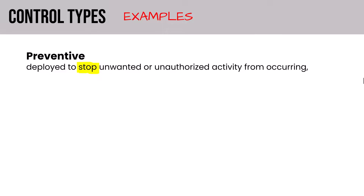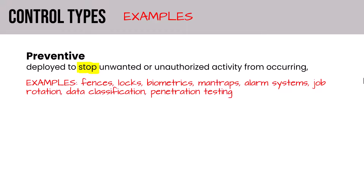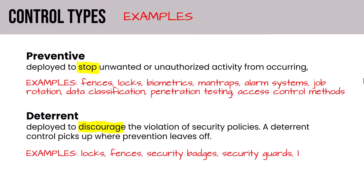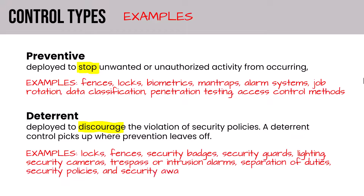Looking at examples of control types: preventive controls, deployed to stop unwanted activity, include fences, locks, biometrics, alarm systems, data classification, penetration testing, and access control. Deterrent controls, deployed to discourage violation of security policies — this control picks up where prevention leaves off — include locks, fences, security badges, guards, lighting, cameras, alarms, separation of duty, security policies, and security awareness training.